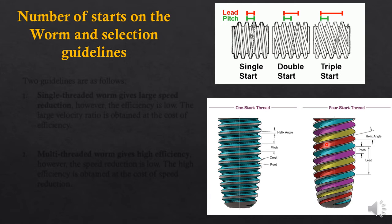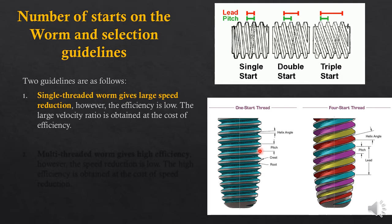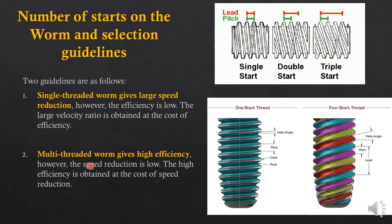There are generally two guidelines for deciding the number of starts for a worm. A figure shows single start thread and a four-start thread, where all four are different starts. Single-threaded worm gives large speed reduction, but in this case efficiency is low — higher velocity ratio is obtained at the cost of efficiency, and a large amount of power is lost as heat. Multi-threaded worms give very high efficiency, but when you have high efficiency the speed reduction will be low. You will have to make a judicious choice depending on the application.